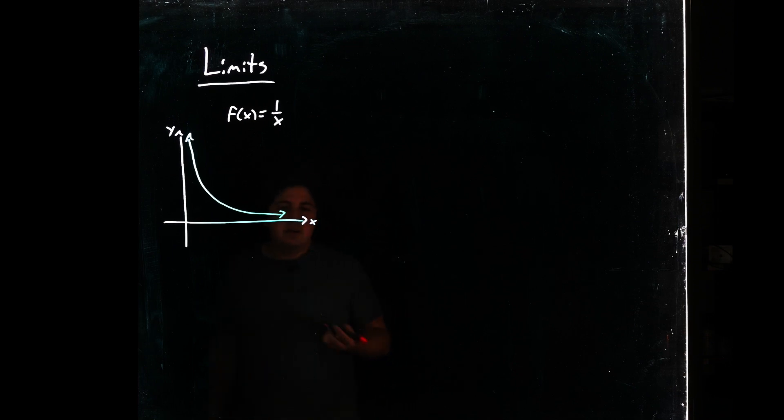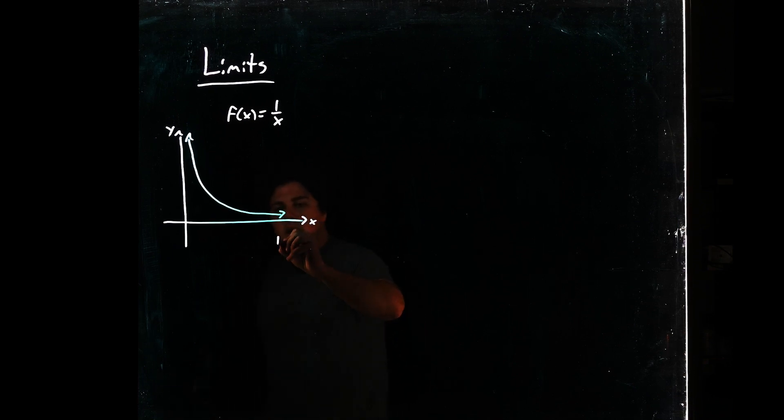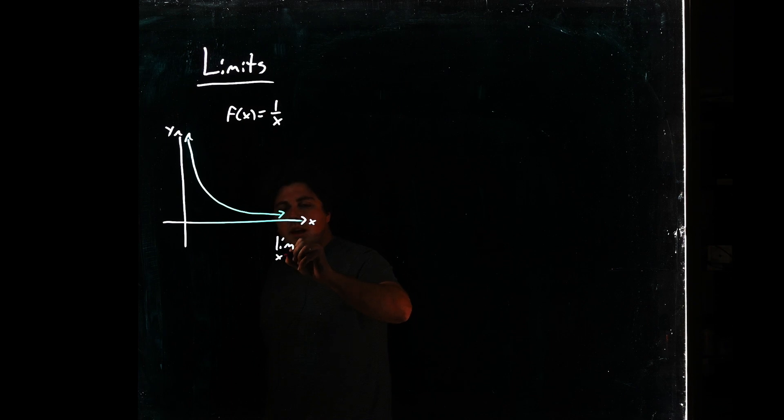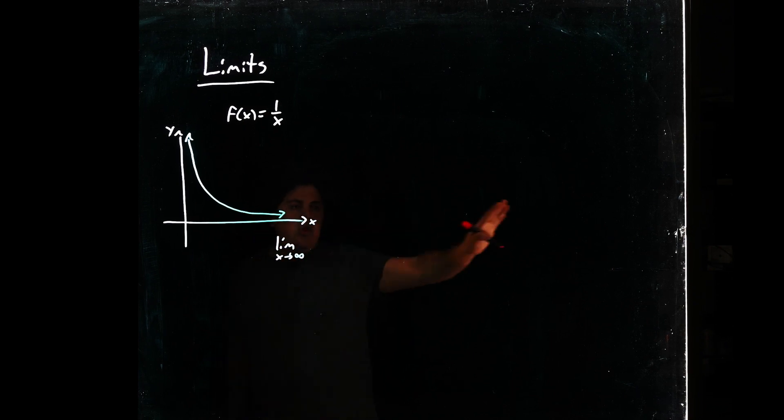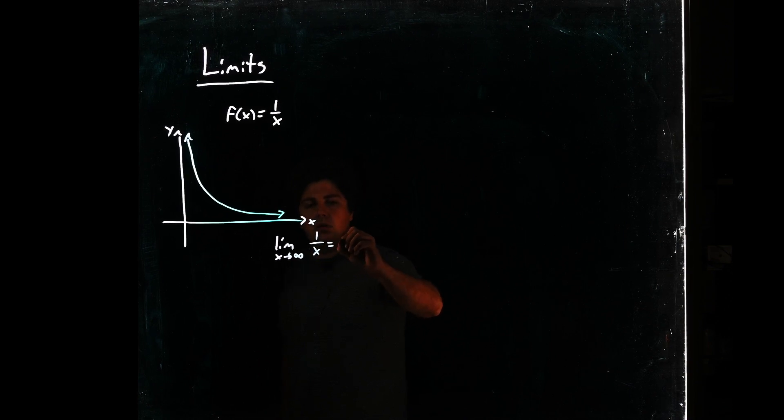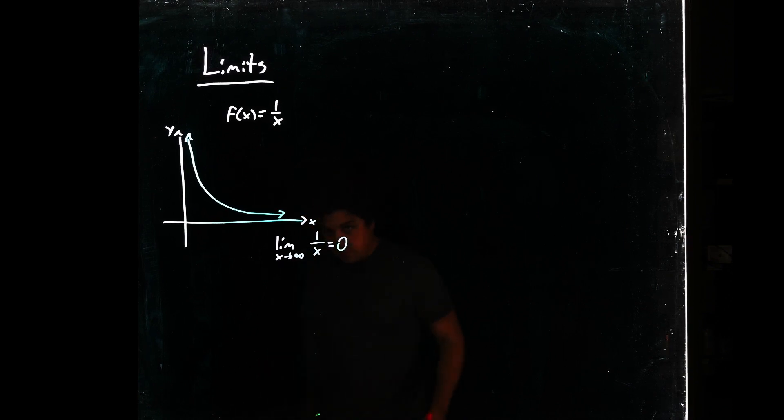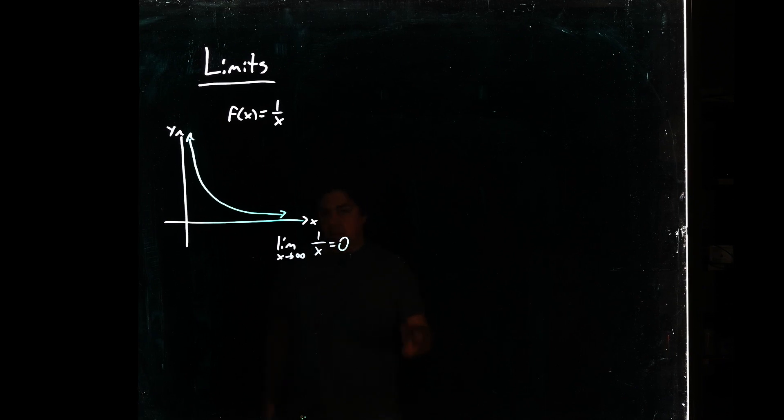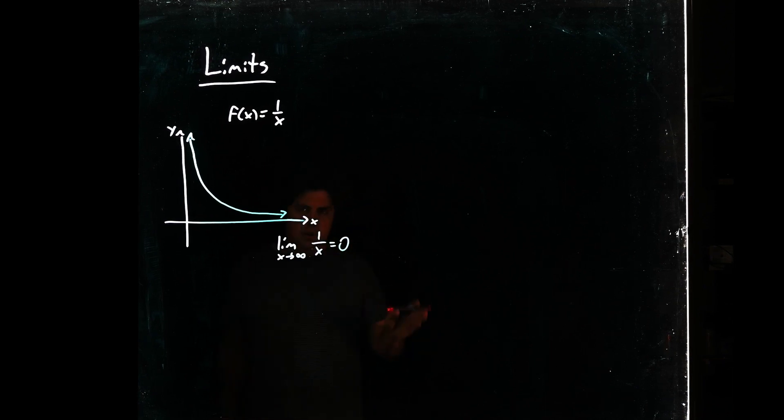So in this case, we'd like to say something like the limit as x goes to infinity, all the way out this way, as you go, it's going to get closer and closer to 0. So this is the statement that 1 over x has a horizontal asymptote at 0.